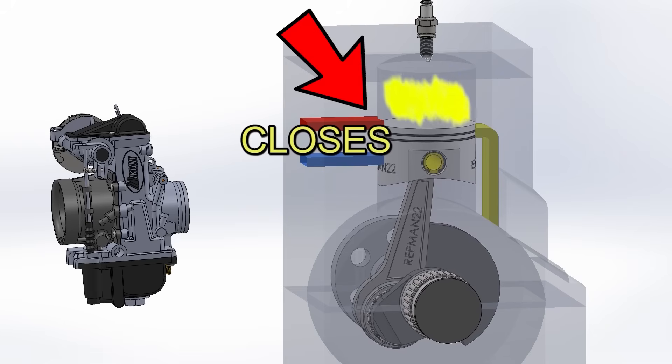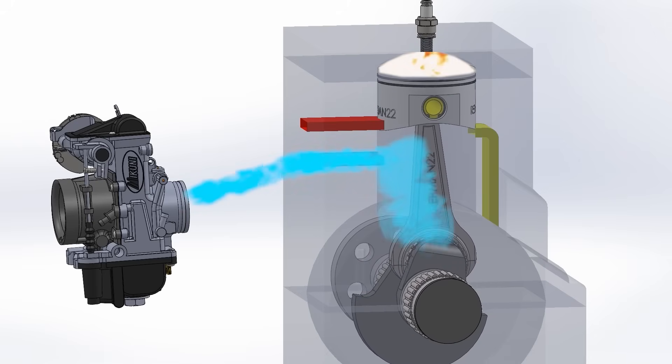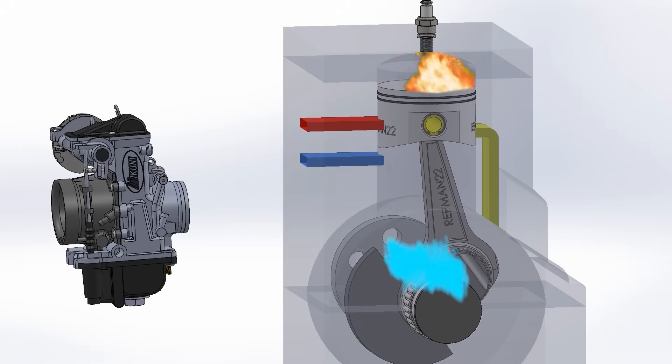When the piston begins to go up, it blocks the port and begins the compression stroke. The spark fires, and the piston descends, uncovering the exhaust port.